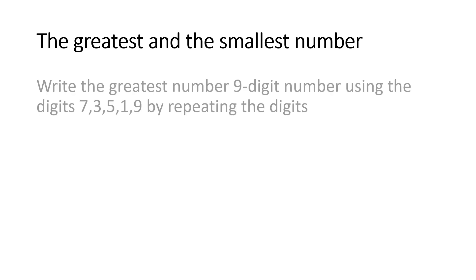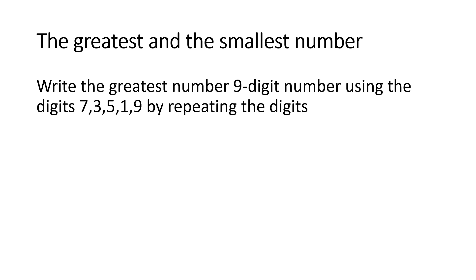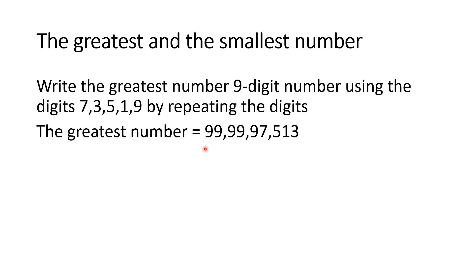To form the greatest 9-digit number using the digits 7, 3, 5, 1, 9 by repeating digits: we have only 5 digits but need a 9-digit number, so 1 digit must be repeated. We always repeat the greatest digit, which is 9. So we write 9 five times, then the remaining digits in descending order: 7, 5, 3, 1. The greatest number is 99 crore, 99,97,513.